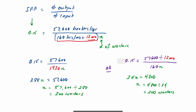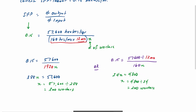And so that's how you go from a starting single-factor productivity to determine the number of workers, where the input is basically the number of hours times the number of workers. I hope you found this one useful.